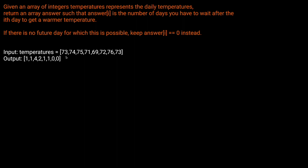So if we look at our example here, where we're given 73, 74, 75, 71, 69, 72, 76, 73, we should return 1, 1, 4, 2, 1, 1, 0, 0. Let's think about how they got this. The index i is the number of days you'd have to wait until you get a warmer temperature. So at the zeroth index, 73, we'd have to wait one day to get to 74 in order to get a warmer temperature — that's where the 1 comes from.